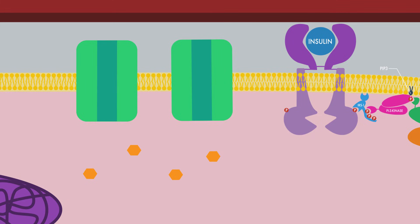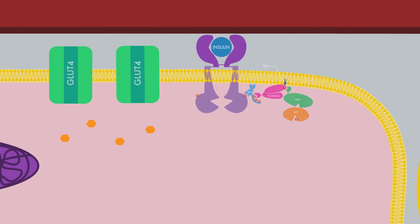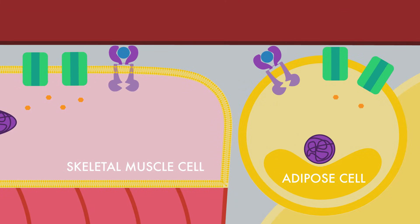Skeletal muscle and adipose tissue contain GLUT4 glucose transporters. Once glucose enters cells, it is metabolized further to generate ATP and used to synthesize molecules of glycogen, which are stored in skeletal muscle and liver tissues, or fatty acids stored in adipose tissue.